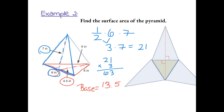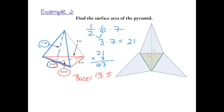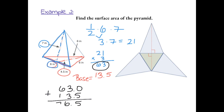Now we find the total surface area by adding the three sides and the base. We have sixty-three for the three sides, plus thirteen point five for the base, giving us a total surface area of seventy-six point five inches squared.